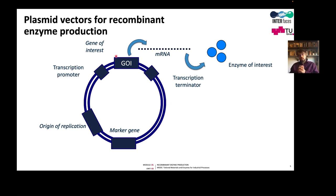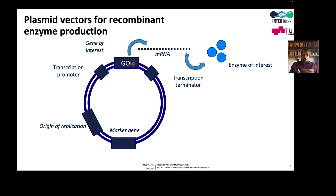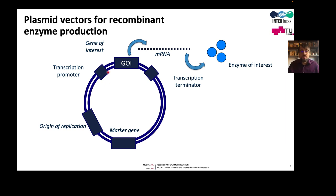Using a high-copy plasmid means the metabolic load slows cell growth and redirects resources away from enzyme production. Therefore, what is done nowadays is to use a low-copy or medium-copy plasmid, typically with around 15 copies per cell, combined with a very, very strong promoter. This gives a lot of mRNA, leading to up to 20% of total cellular protein being the enzyme of interest.